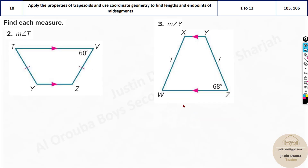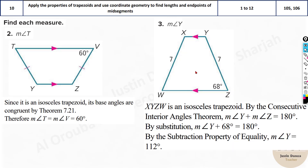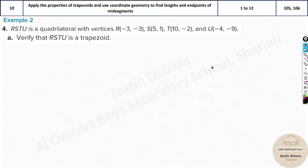Here we have more straightforward problems. We are told to find the measure of angle T. This is an isosceles trapezoid — 60 and 60 are the same, so the answer is 60 here. What about Y? It's 180 minus 68, which is 112, because these angles are supplementary when you add them.